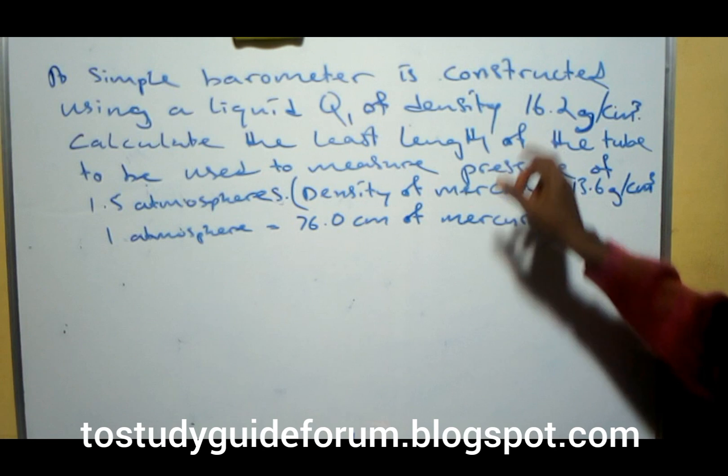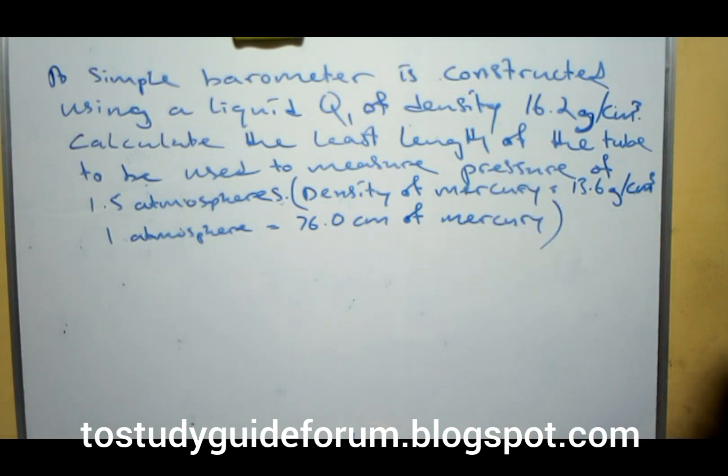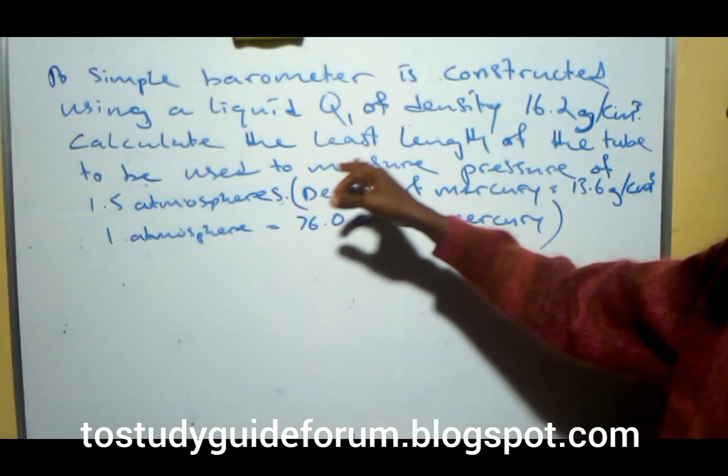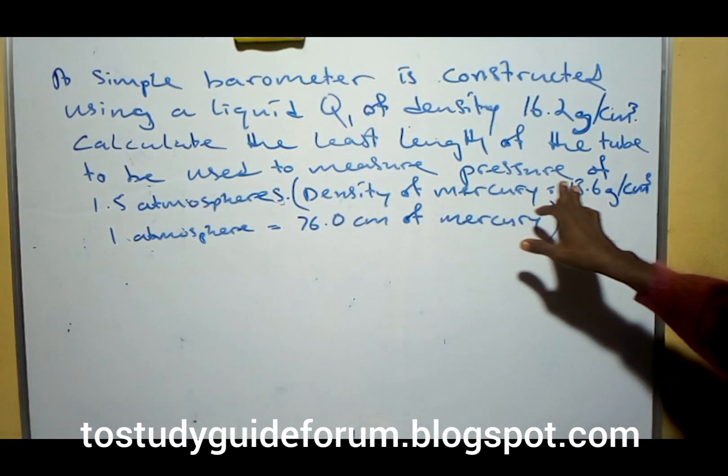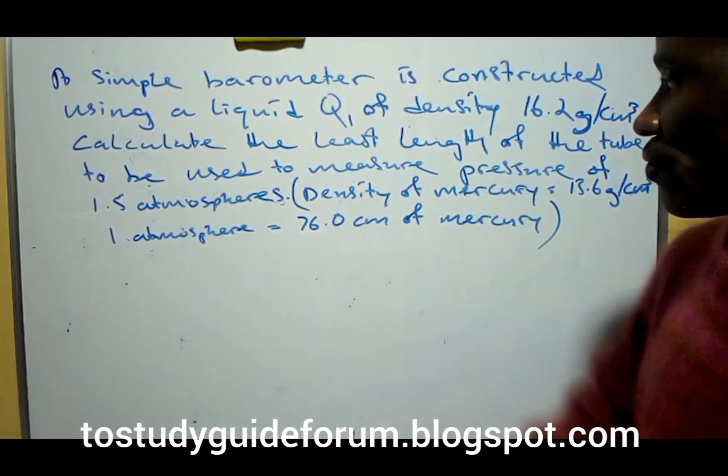of density 16.2 gram per cm³. Calculate the least length of the tube to be used to measure the pressure of 1.5 atmosphere.